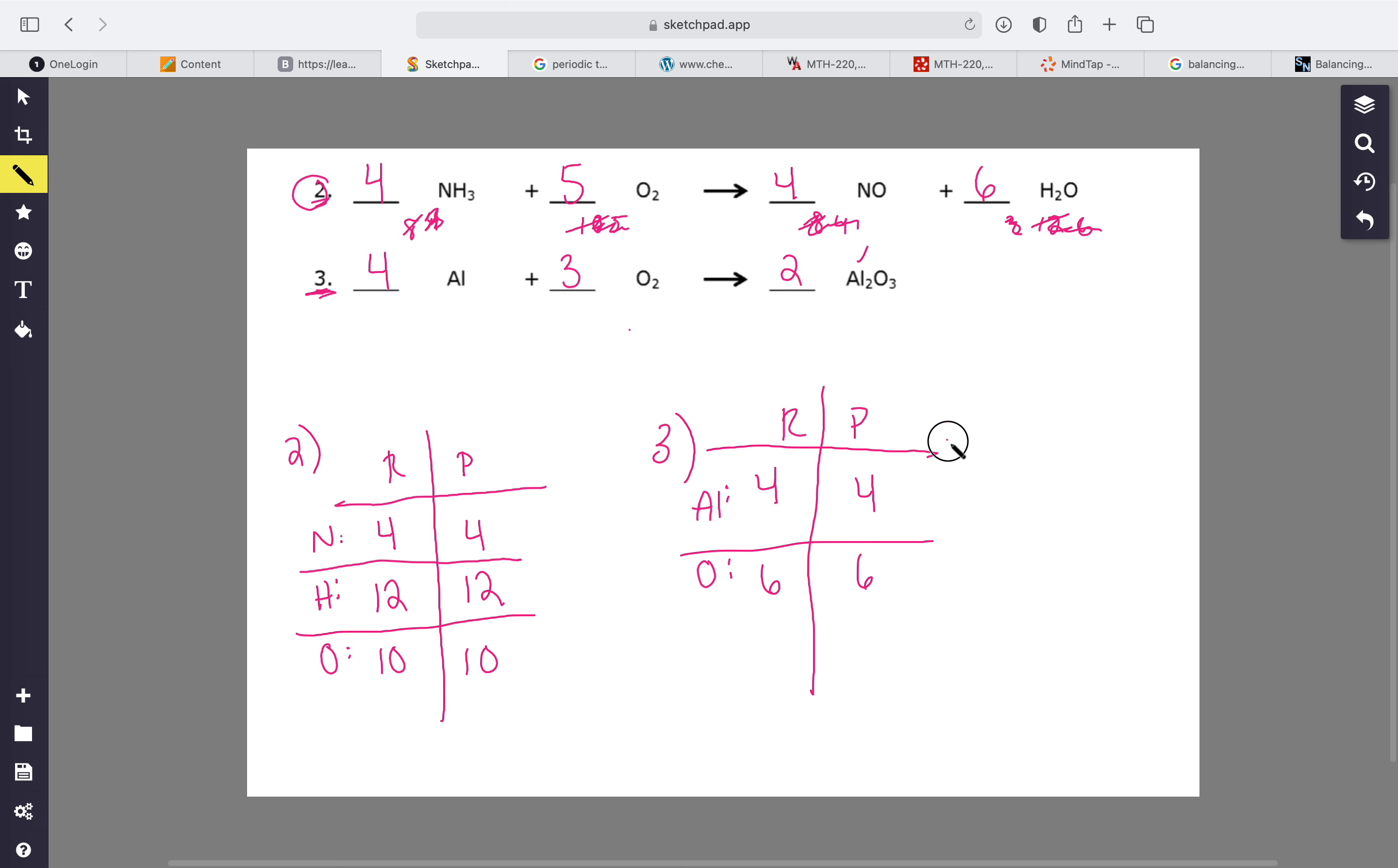Alright, oxygen we have six over here and we have six over here. Cool, so we know that this one is correct and this one was correct. So those are the answers to those.